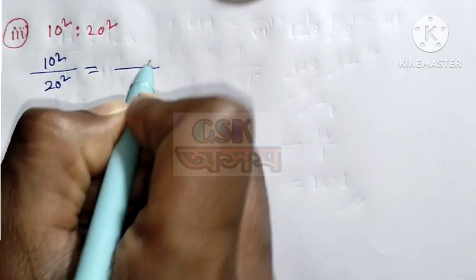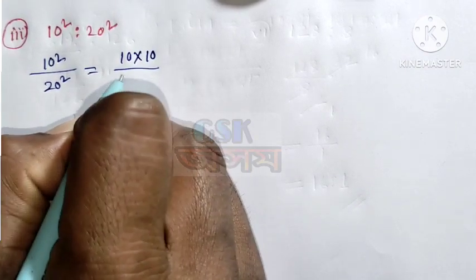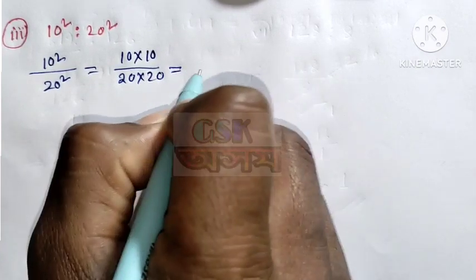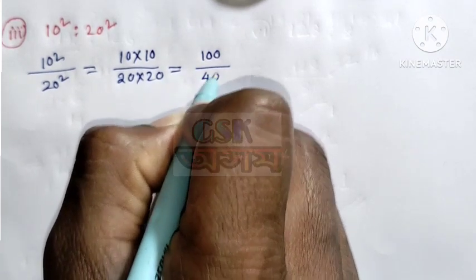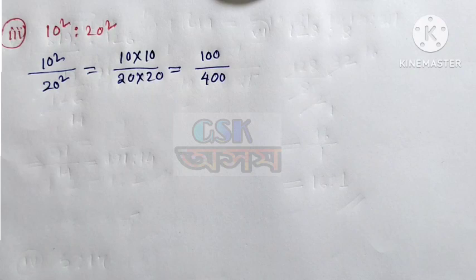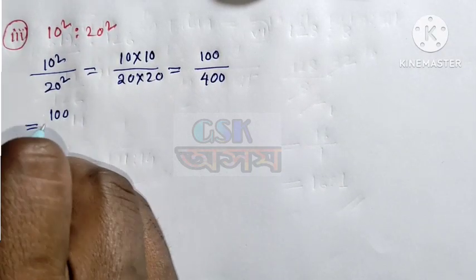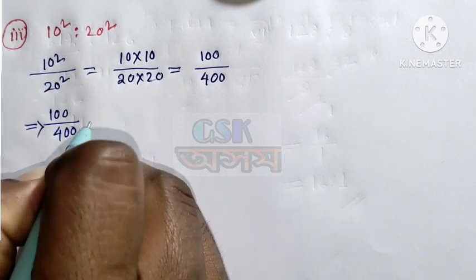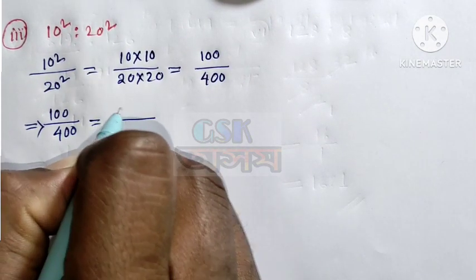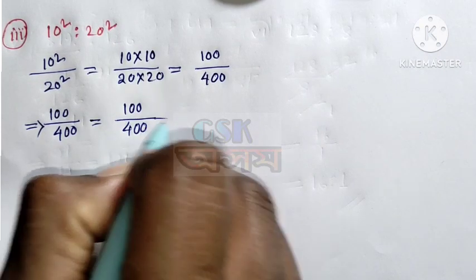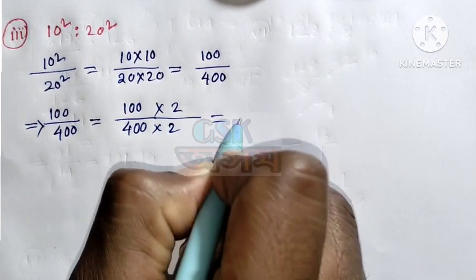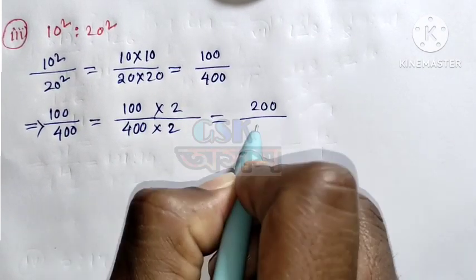Next is 10 squared or 20 squared. This square equals 20 square. 10 square means 10 divided by 10, and 20 square means 20 divided by 20. 10 divided by 10 equals 100, and 20 divided by 20 equals 400. 100 by 400.